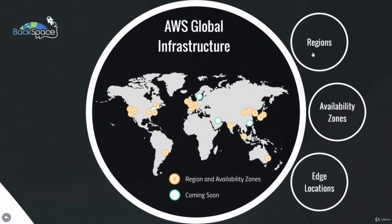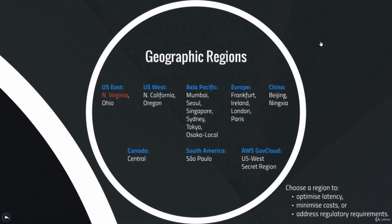The AWS global infrastructure is massive and is divided into geographic regions, and those geographic regions are divided into separate availability zones. There are lots of regions distributed throughout the globe. For this course, we will be using the North Virginia region because that is the largest region and supports all of the available AWS services. If you're using a smaller region, such as Mumbai, you may encounter problems if it doesn't support all of the services.